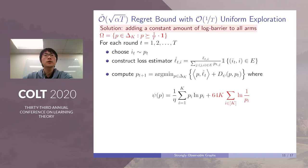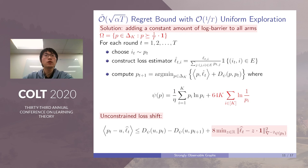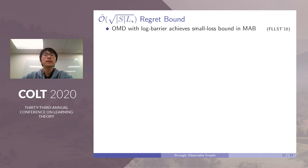The solution to this issue is to simply add a constant amount of log barrier regularizer to all arms. Now we restrict our strategy to the domain where each arm has at least 1/T probability to be chosen, and use OMD with this modified regularizer. And thanks to this constant amount of log barrier, we enjoy the property of unconstrained loss shift, which gives us the following inequality. Here, z can actually be any real value compared to the previous OMD with only entropy regularizer. Then, choosing z to be the same value mentioned above, we recover the √(αT) regret bound. The additional term K² comes from the constant amount of log barrier regularizer.